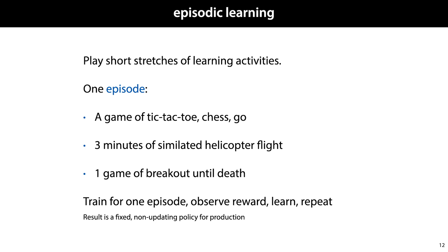Even though reinforcement learning agents can theoretically learn in an online mode, continuously updating their model while exploring the world, this can be difficult to control in practice and may lead to unpredictable behaviors. A much more common approach is episodic learning. We define a particular activity — called an episode — such as one game of chess, one helicopter flight of a fixed length, or one Atari game for as long as the agent stays alive. We let the agent act one episode based on its current policy, observe the total reward at the end, and use that to update the policy parameters. Often, after training for a while and becoming convinced we have a good policy, we keep it fixed when rolling it out to production — for example, a robot vacuum cleaner may contain a policy trained by reinforcement learning but almost certainly won't update its weights while vacuuming your floors.